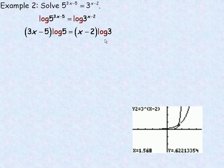Now, I'm trying to solve for x. So what I would do next is I would expand out both sides. So I'm going to take the log of 5 and multiply it in here and the log of 3 and multiply it in here. We'd have log 5 times 3x, minus 5 times the log of 5. And then log of 3 times the x, so x log 3, and then log 3 times the negative 2, so minus 2 log 3.